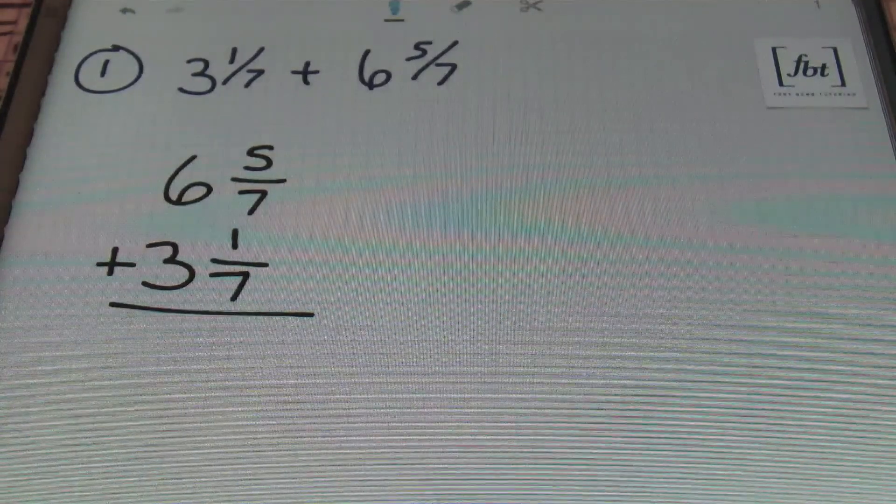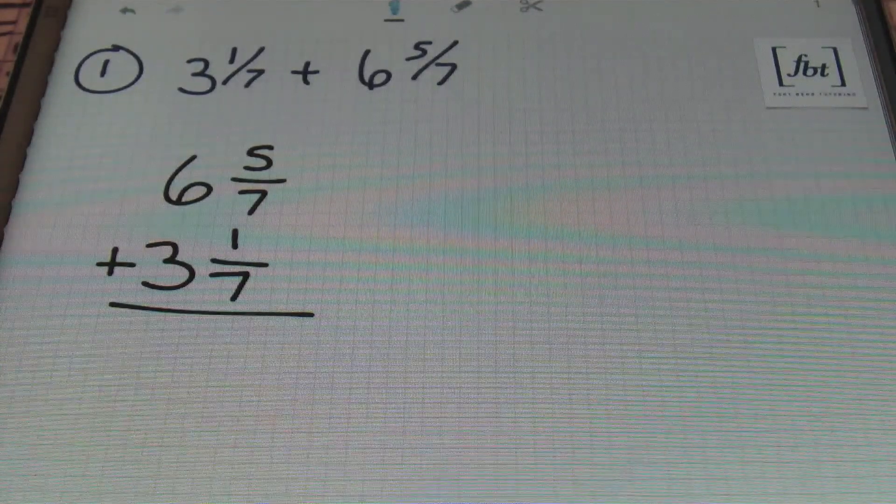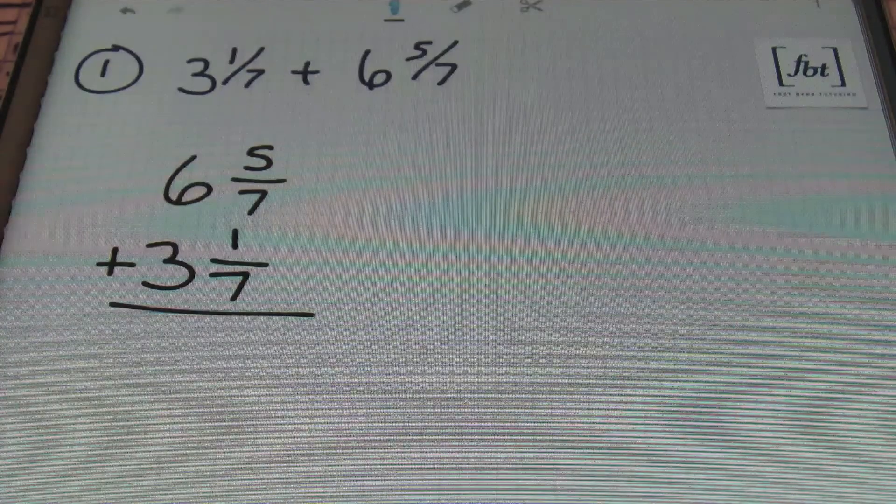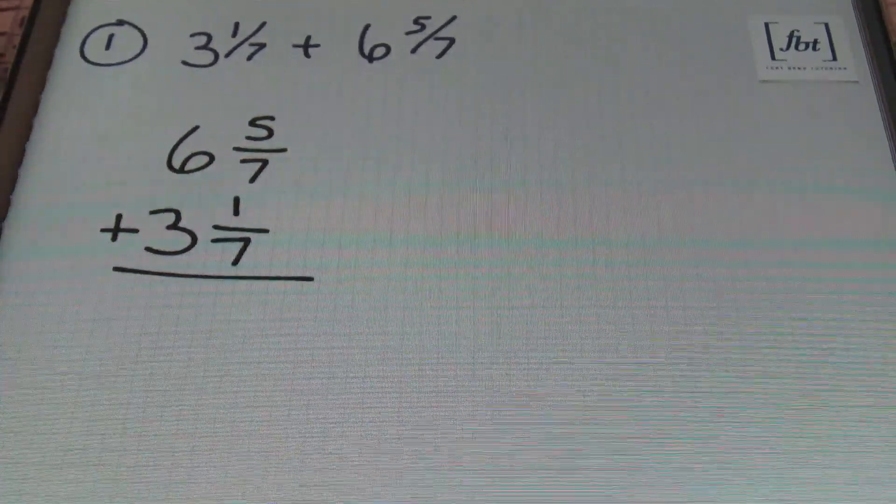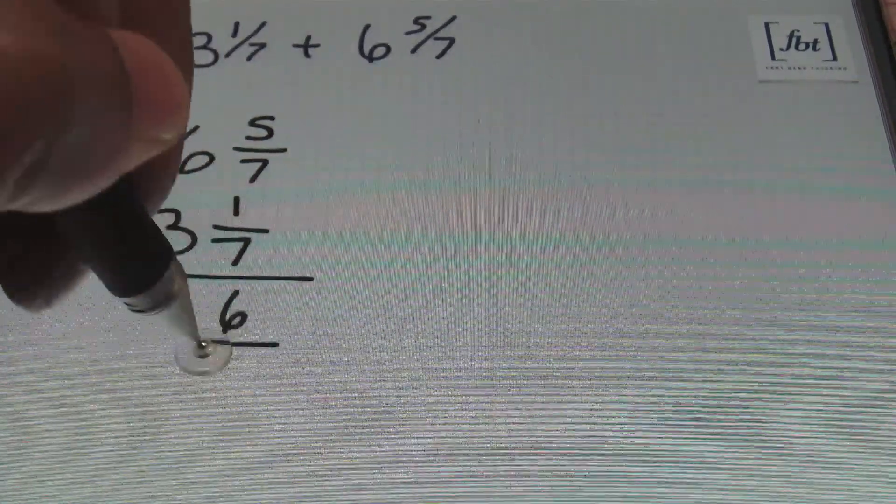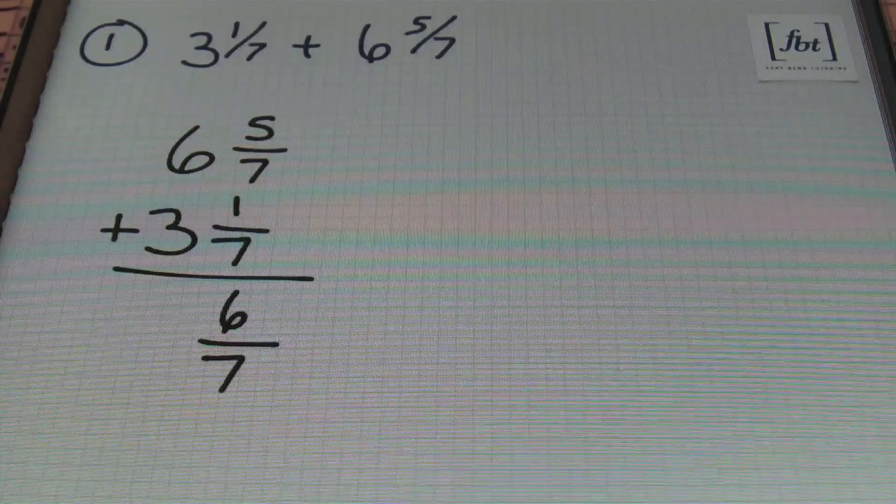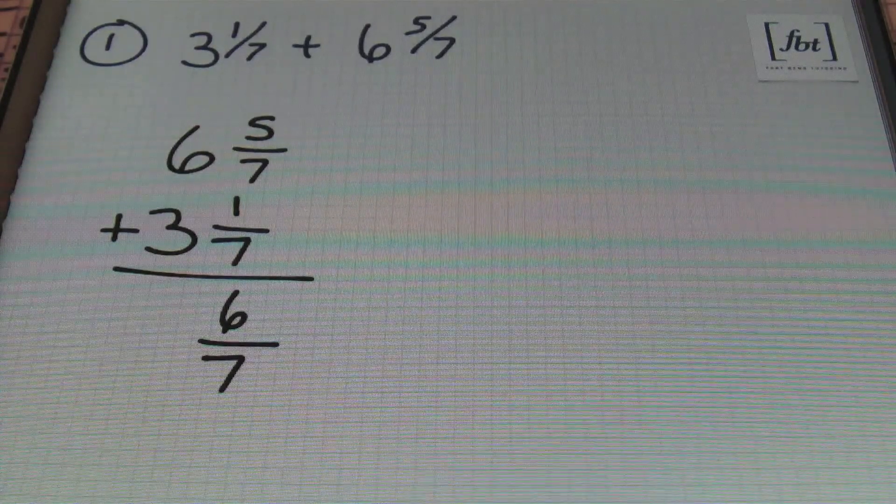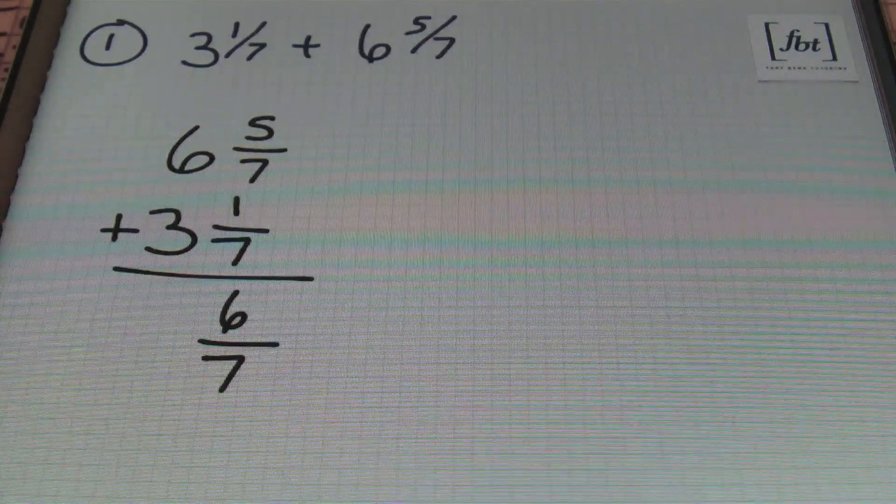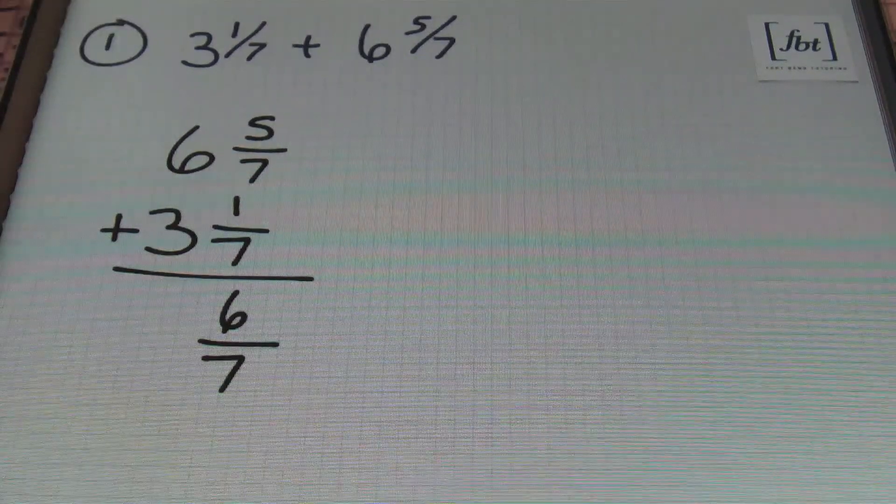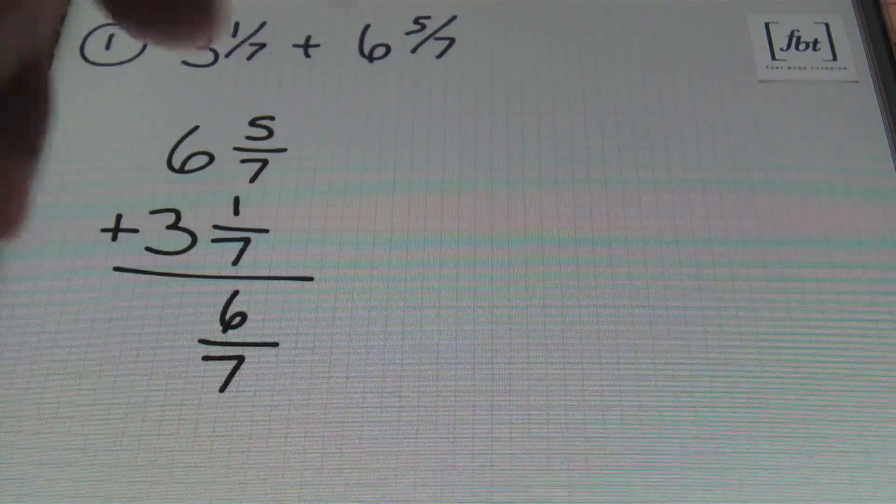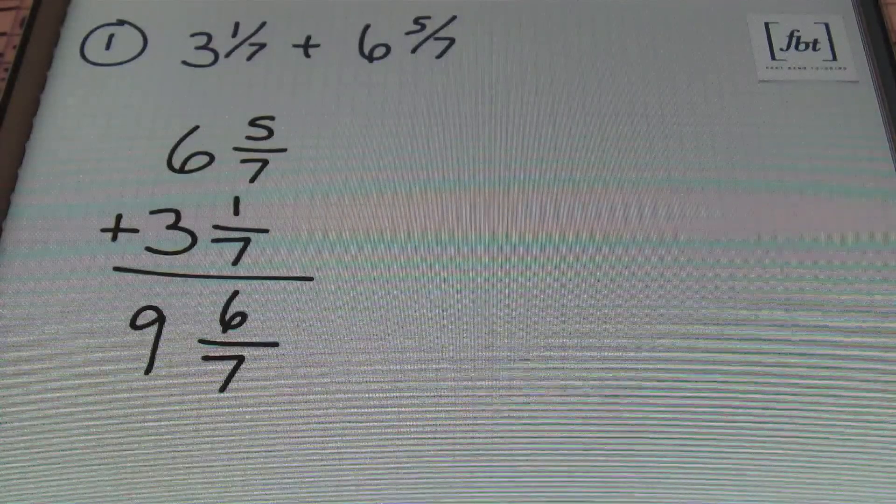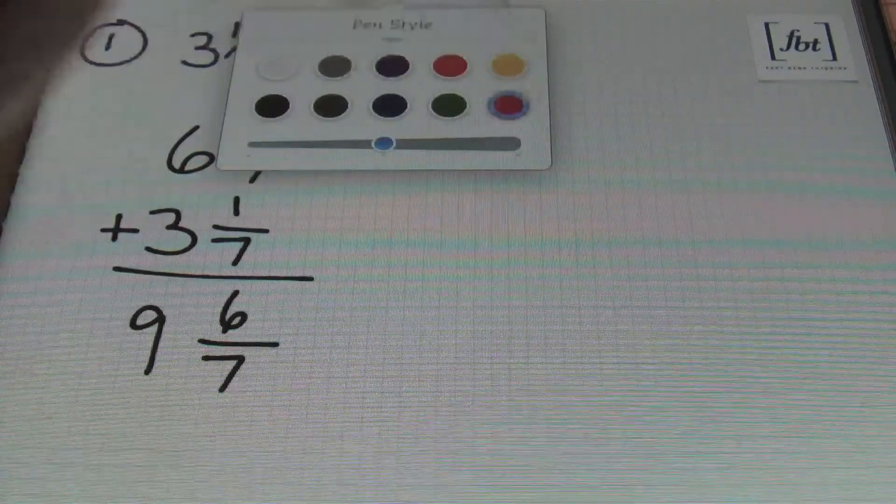You want to ensure that they have a common denominator that that bottom number is the same. And in this case we do have common denominators. So that means we can go ahead and add the numerators together. So adding 5 plus 1 will always give me 6 and then that will remain over that same denominator of 7. The denominator doesn't change when you're adding fractions. Then I'll be adding the whole numbers. I'll have 3 plus 6 which is 9. So my result will be 9 and 6/7 and that's the answer.